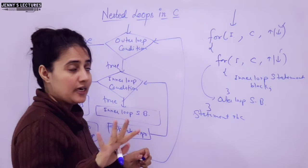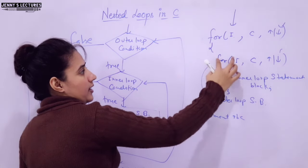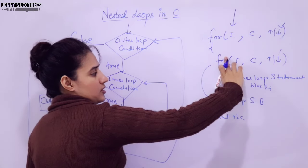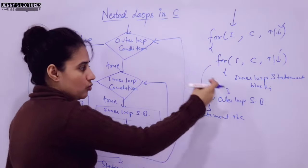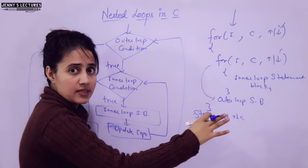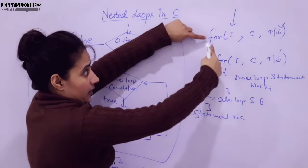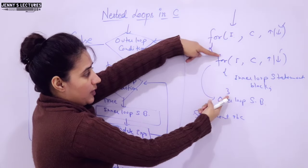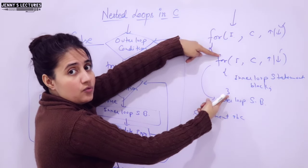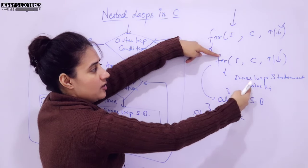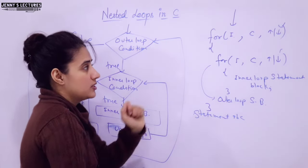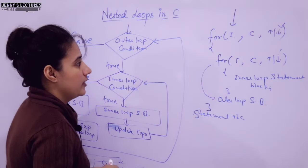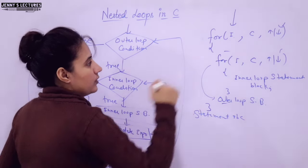Third point: it is also a valid case to write multiple for loops sequentially inside an outer for loop — one for loop, then another for loop, then another for loop as separate blocks. This is not multiple-level nesting; this means one block for the first for loop, then a second block for the second for loop, then a third block for the third for loop. You can also write some statements between them.